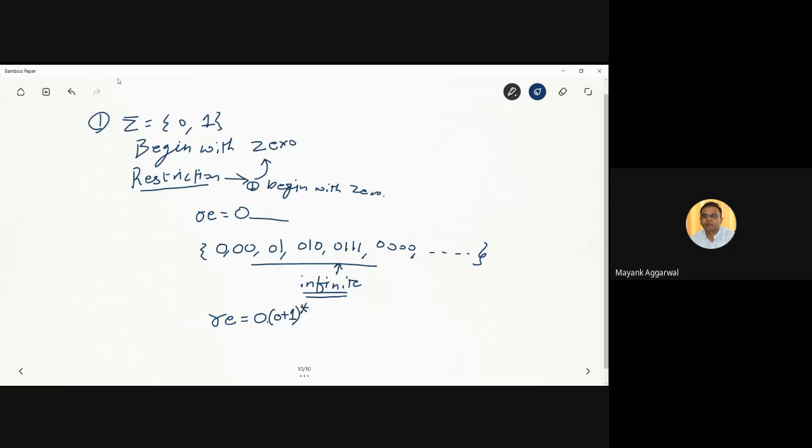What does (0+1)* mean? Either zero or one, any number of times. Now from this combination, try to build this grammar. Zero can come from this zero. Zero zero can come - first zero from here and another zero from here. Zero zero zero will come - first zero from here and other zeros from repetition of this zero.